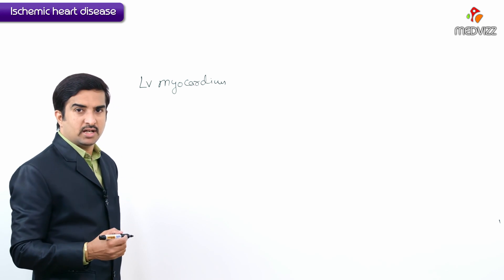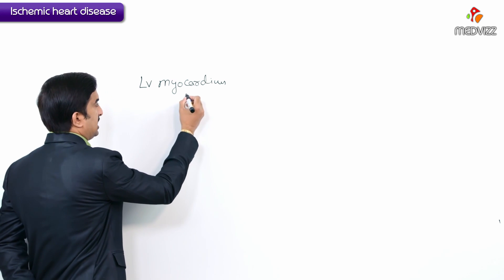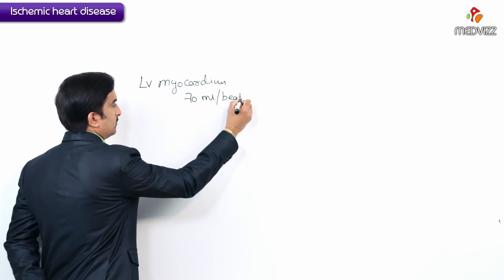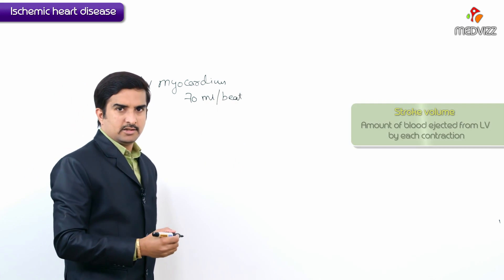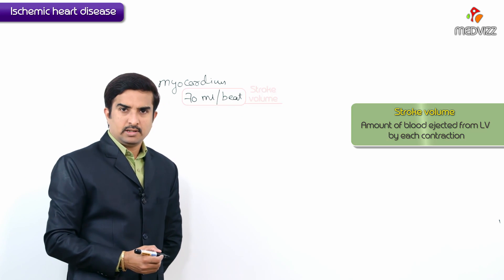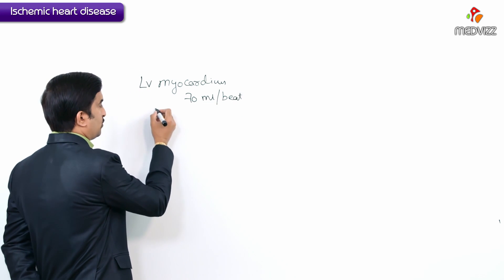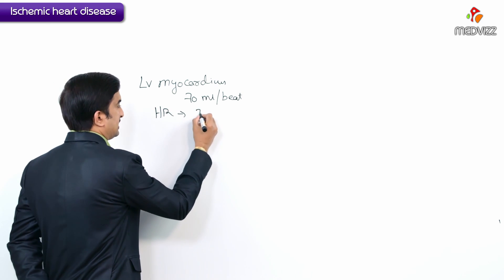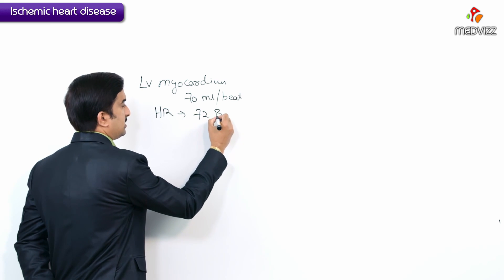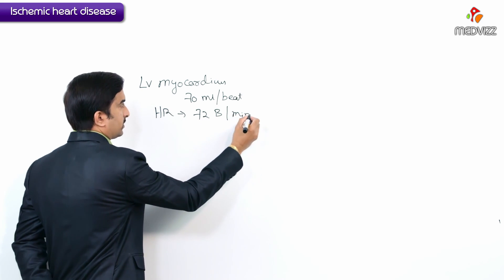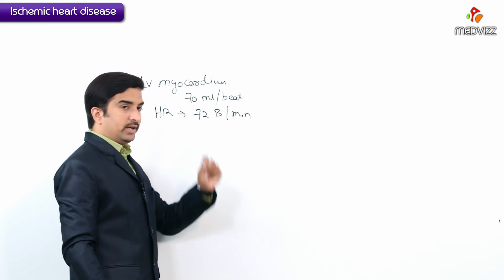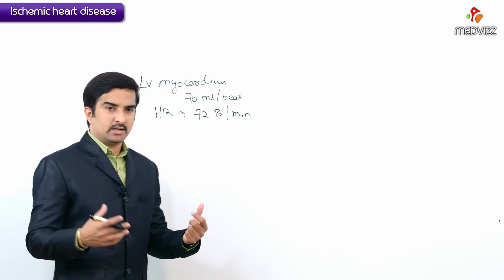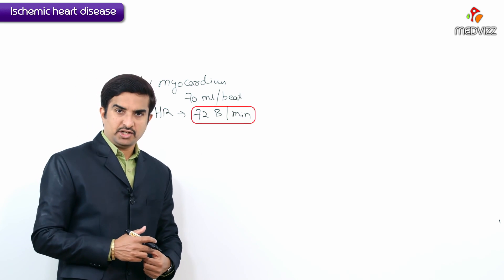The left ventricle pumps blood into the aorta at approximately 70 ml per beat, which is called the stroke volume. The heart rate under normal resting conditions is approximately 72 beats per minute. The myocardium is designed to work efficiently under these normal resting conditions.